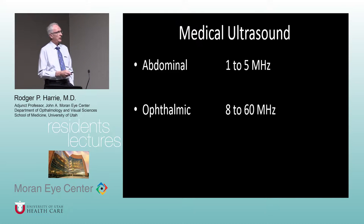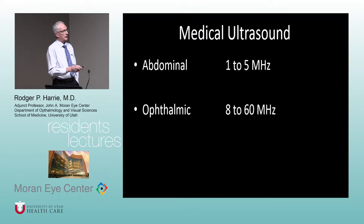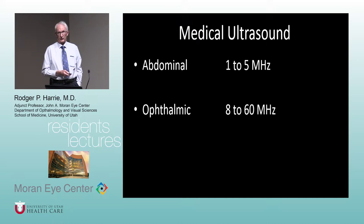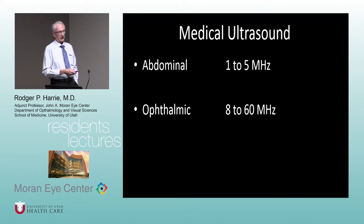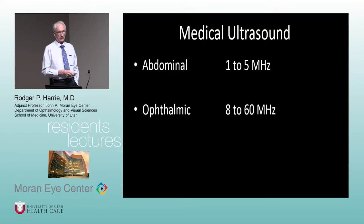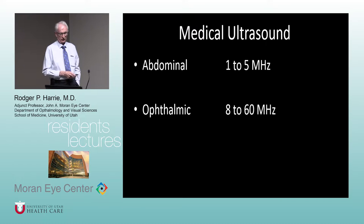Medical ultrasound for abdominal use is in a lower frequency range; ophthalmic goes up to 60 MHz as mentioned. We can do that because of how the eye is structured — the wall is not very thick, so you can penetrate relatively easily compared to abdominal tissue. Also, the eye is full of fluid, and ultrasound travels readily through fluid-filled structures. The higher the frequency, the better the resolution, but the less the penetration. That's why UBM uses very high frequencies but only images the initial anterior few millimeters of the eye before losing sound energy.